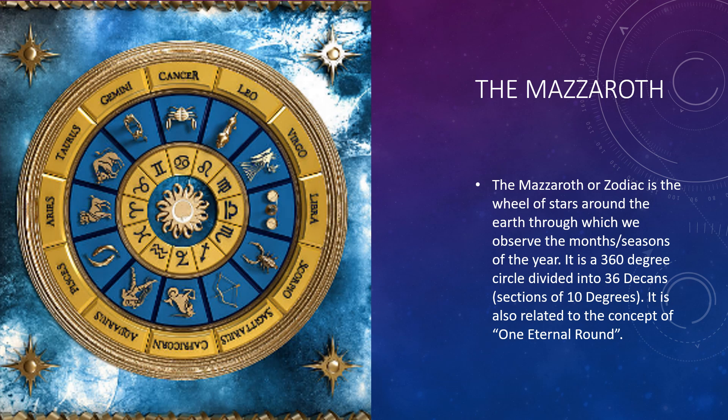In the ancient Israelite prophetic tradition, the concepts related to what we call the mazerot, or the zodiac, which is a wheel of stars pretty much around the earth, from which we observe months and seasons of the year. These are your particular zodiacal signs like Cancer, Leo, Aquarius, Sagittarius, all of these particular signs. It's considered a wheel, or a ring, if you will. It's a 360-degree circle divided into 36 decans, or sections of 10 degrees. Each particular season or zodiacal sign, like Cancer or Leo, contains three decans, or 30 degrees, of the wheel.